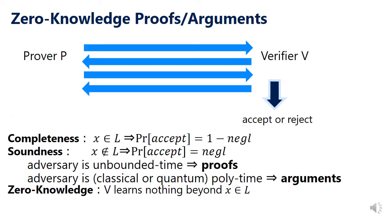Zero-knowledge proofs and arguments are fundamental primitives in cryptography. In those primitives, a prover tries to convince a verifier of the truth of some statement without revealing anything beyond the truth of the statement itself. Formally, we require the following three properties. The first is completeness, which means that if the statement is true and everything is done correctly, then the verifier accepts with overwhelming probability. Second is soundness, which means that if the statement is false, then the verifier accepts with negligible probability.